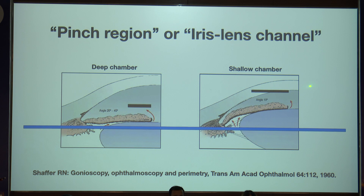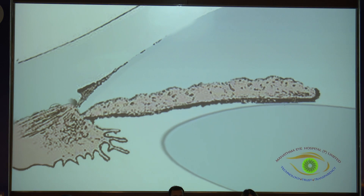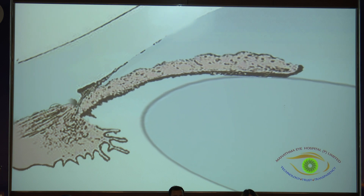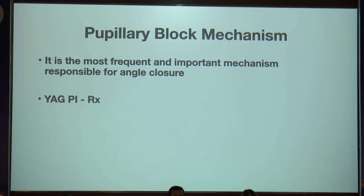The pupillary block mechanism causes the angle closure. That is why it is important to do the LPI. In a laser peripheral iridotomy, before and after: you can see the angle marginally opening up. The idea is to do a Nd:YAG LPI, focusing on a crypt, making sure the pupillary block mechanism doesn't happen.